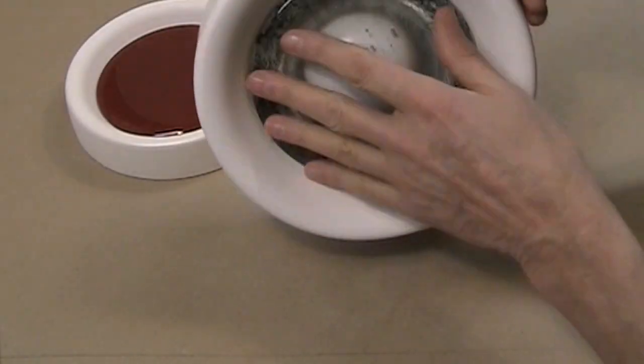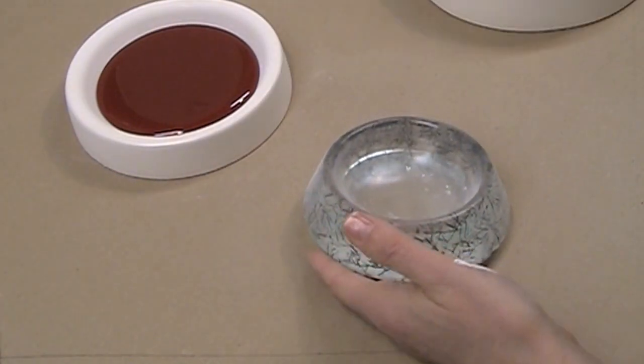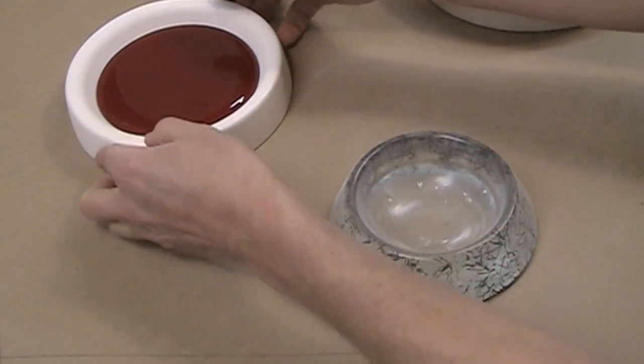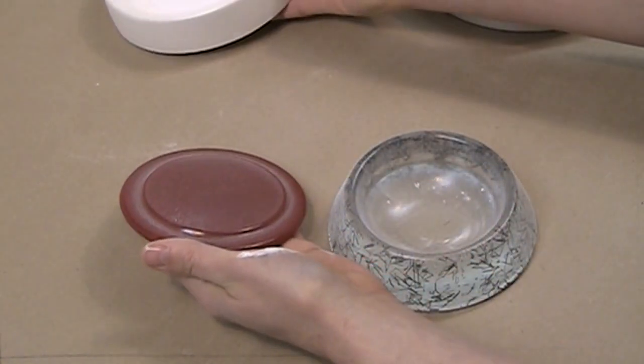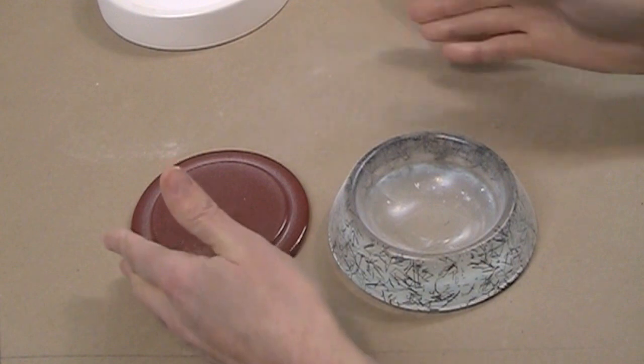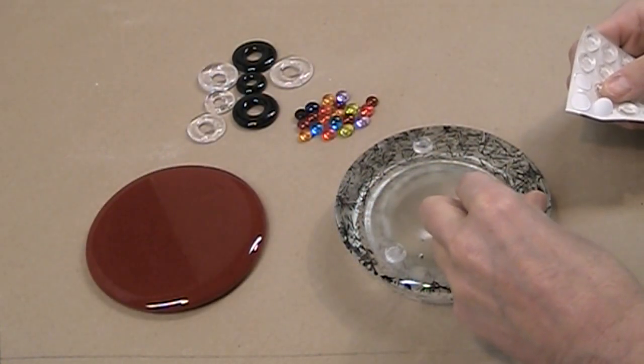After firing, the castings are removed from their molds. Dishwashing liquid and a non-abrasive cleaner such as Bon Ami are used to remove any traces of primer. Bump-ons are added to the base to create a finished look.